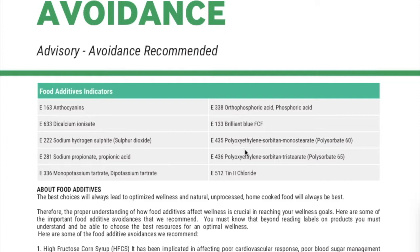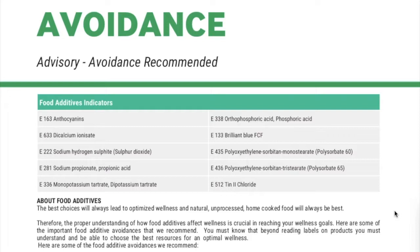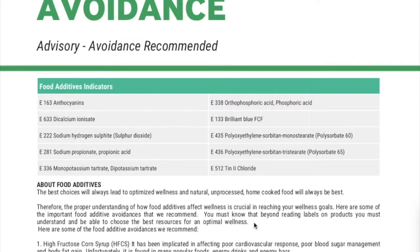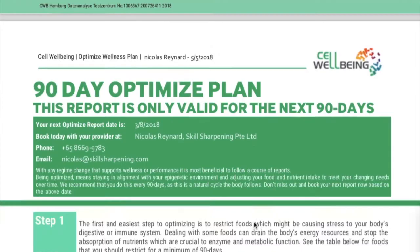Food additives are everywhere — even in soap and hair cream. One example I found here is Brilliant Blue, which was in a small chocolate sweet I was eating a lot during my last 90 days in pastry tastings. You need to get rid of these. If you also see aluminium somewhere, that's something not good to avoid.